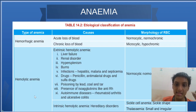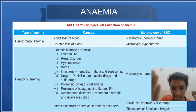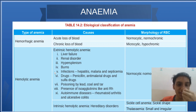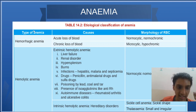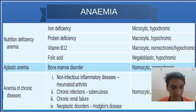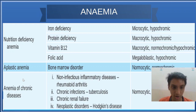This is the etiological classification, covering the pathological features. The types are: hemorrhagic anemia, hemolytic anemia, nutritional deficiency anemia, aplastic anemia, and anemia of chronic diseases.